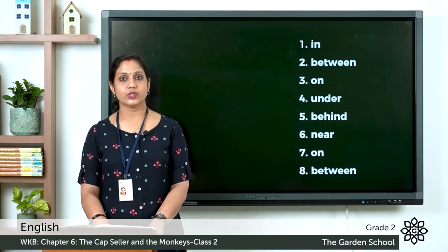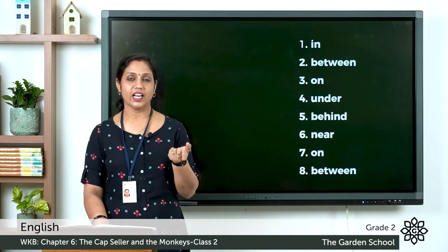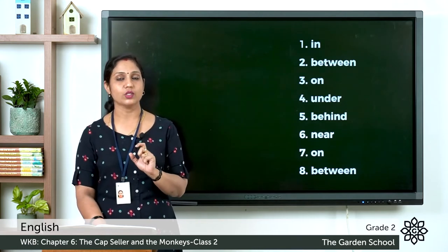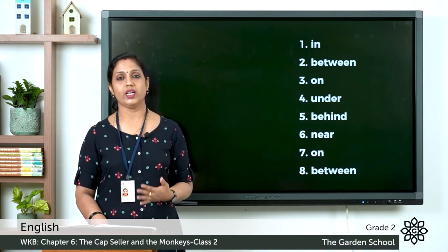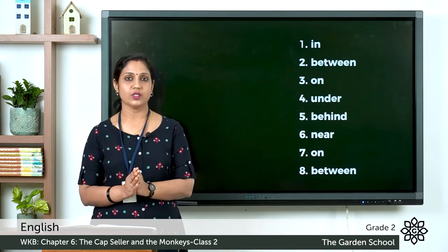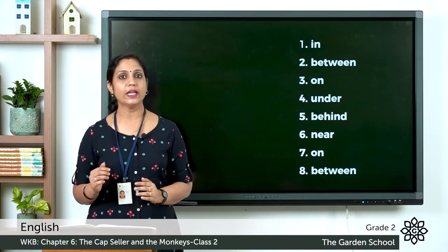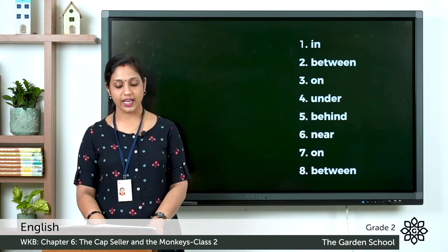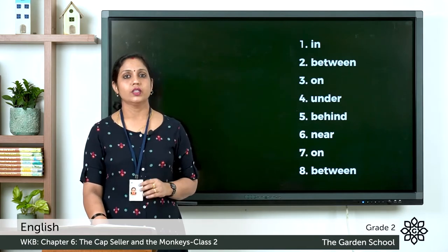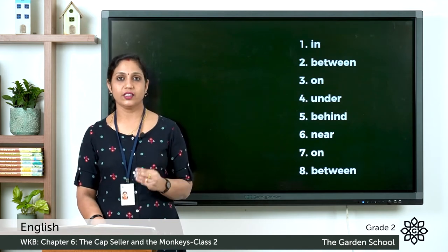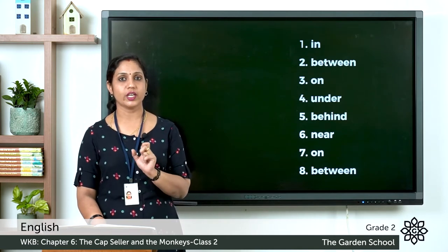Let's check the answers. (1) Mohan read a book in the library — the preposition is 'in.' (2) The squirrel hid between the leaves — the preposition is 'between.' (3) The cat is sitting on the mat — the preposition is 'on.' (4) The red car stood under the tree — the car is under the tree, so the preposition is 'under.' Underline these words in your book.